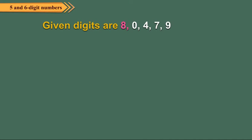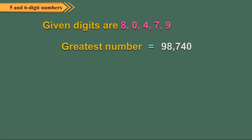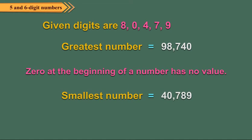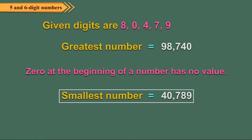Now, use the digits 8, 0, 4, 7, 9 to build the greatest and smallest 5-digit numbers. The greatest number is 98740. If we arrange in ascending order, we get 0, 4, 7, 8, 9 — but that is actually 4789, a 4-digit number. So whenever one of the given digits is 0, it is not written at the extreme left. While forming the smallest number, we write 0 in the second place from the left, giving us 40789.